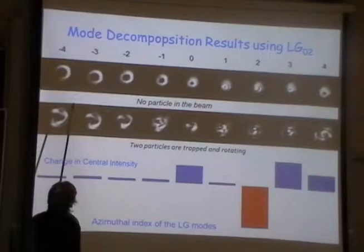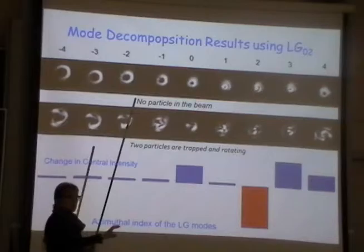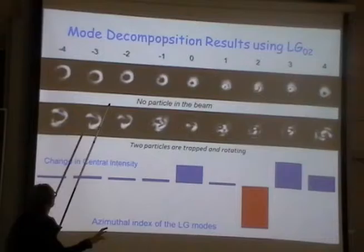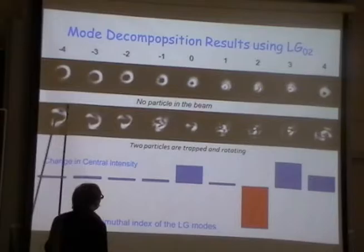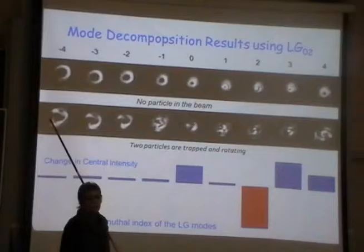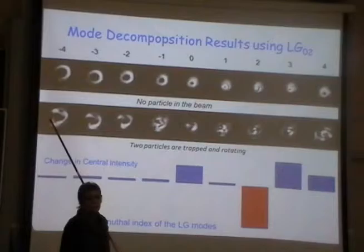I do these experiments. First, without any particle, I put my LG02 beam through the analysis hologram which is also LG02. This is supposed to give a Gaussian in one order, and so on to the sides. As you can see, there are many modes in this beam. Although I call it LG02 and the biggest intensity is in LG02, in other orders there are still plenty of contributions.